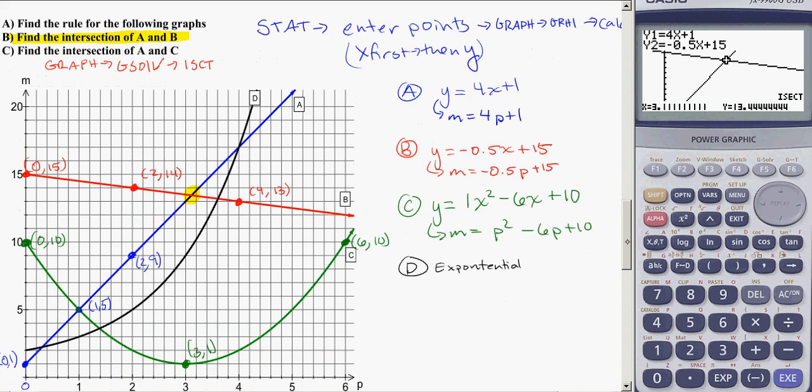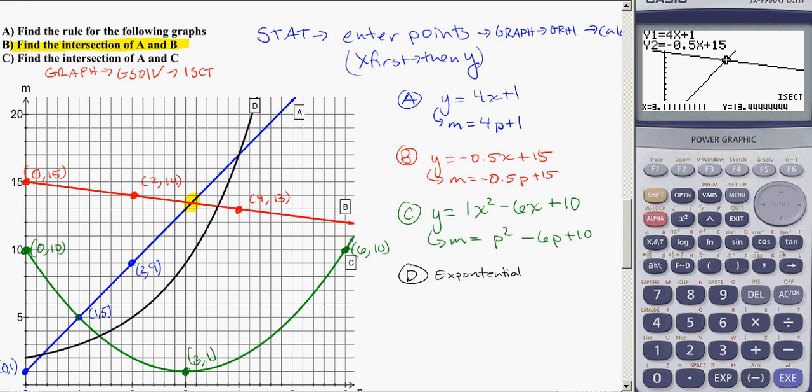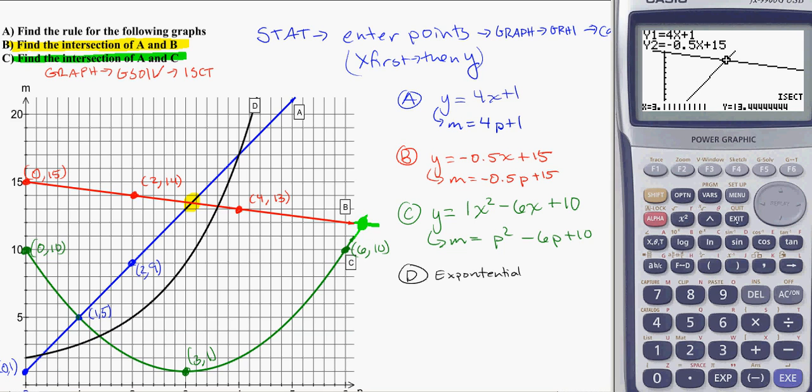Now the second intersection I want was between A and C. That was this guy here, between A and C. I can't even see where that is on the graph, but I imagine that the C line would continue up, and the B line would continue on, and I'd get an intersection point. So let's see if we can find that using the calculator.